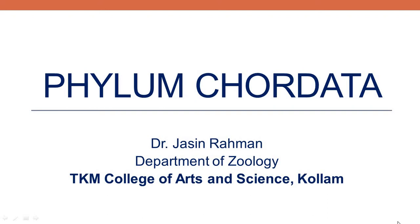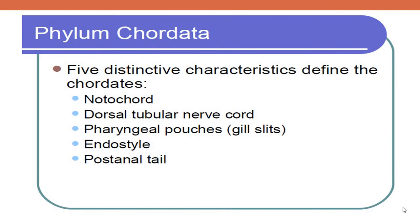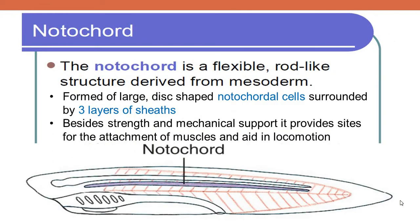Phylum Chordata comprises the organisms which have got a backbone. We have already discussed in our previous classes that Phylum Chordata refers to the organisms which have got some special characters, especially the notochord, then dorsal tubular nerve cord, pharyngeal gill slits or gill pouches, then endostyle and post-anal tail. We can see these characters one by one because these are the important or distinctive characteristics that make an organism a chordate.